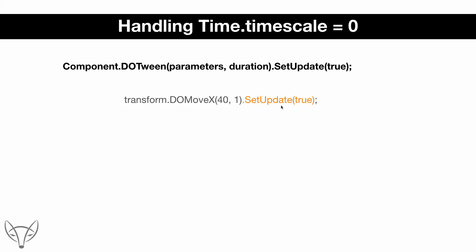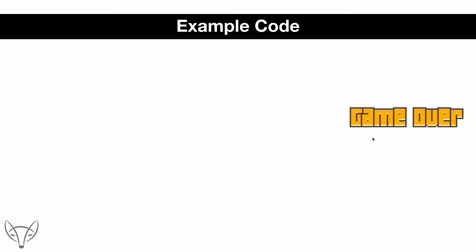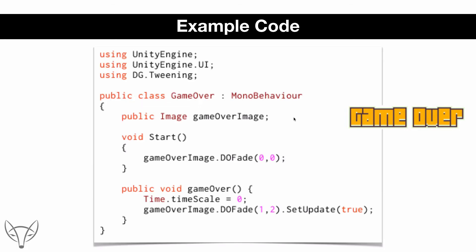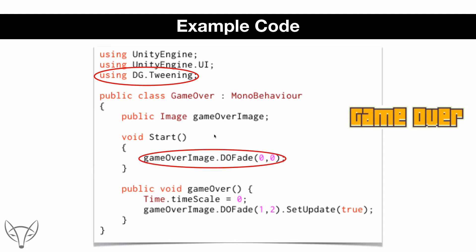Let's look at a simple example: a game over image that should be invisible at the start, then fade in during two seconds when the game is over. The code requires a using statement — using DG.Tweening — without which you cannot use DoTween. On Start, we make the image invisible by setting DoFade to zero in zero seconds, which means immediately. When the game is over, we use DoFade again with value 1 and duration 2 seconds. Since timescale is zero, we must add SetUpdate true.